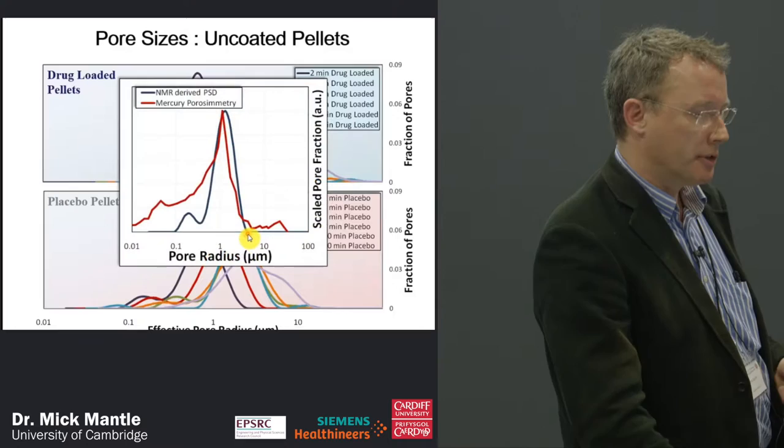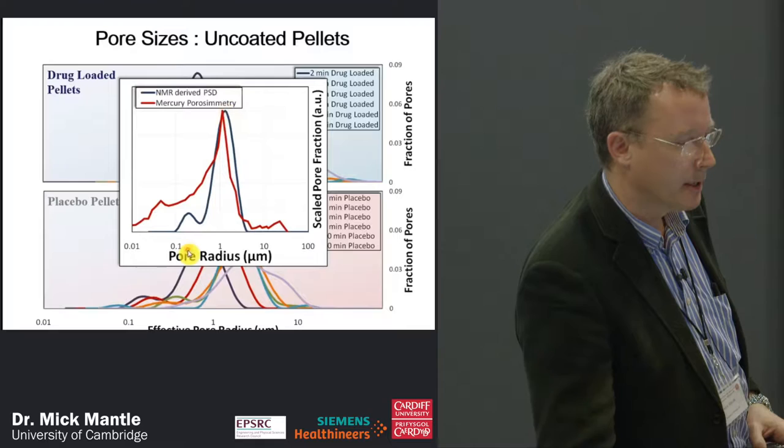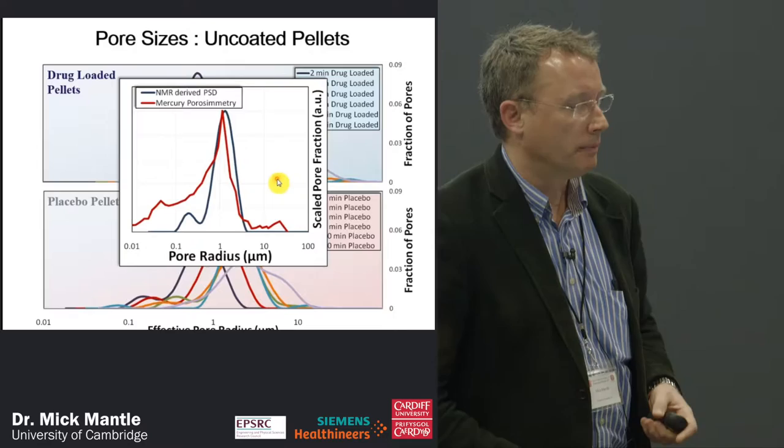Here is the proof that the pore size distributions are realistic. These are completely independent measurements — we haven't cheated and matched peaks. Shown here is pore radius for the placebo pellet compared with one derived from mercury porosimetry, and we're fairly confident we have the right numbers, which is obviously important for the modelling we'll show next.